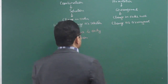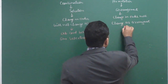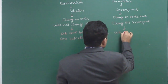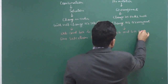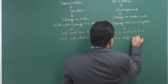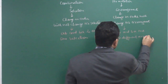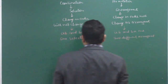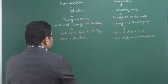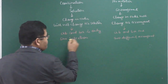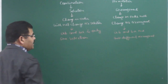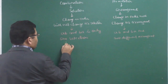As far as arrangements are concerned, change in order will change the arrangement. AB and BA are two different arrangements — two different arrangements. So therefore, here order is very important in permutation, whereas in selection, order is not important at all.